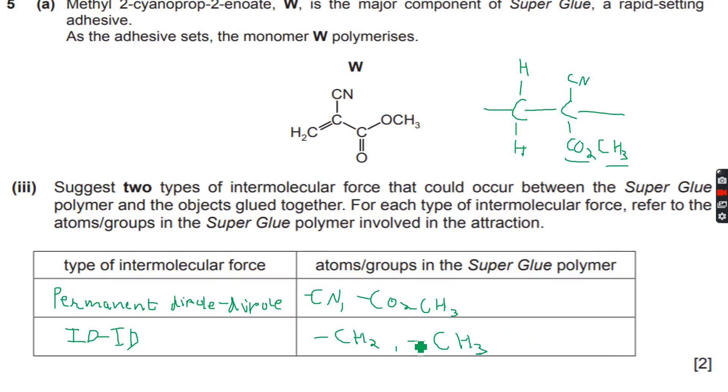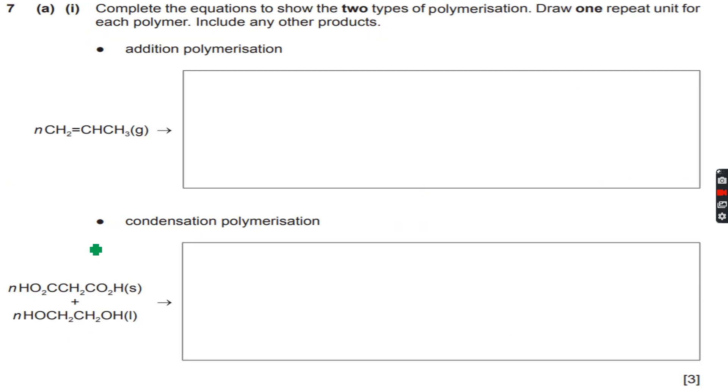We can also say CH3 over here. Now let's move to the next question. Complete the equations to show the types of polymerization. Draw one repeat unit for each polymer, including any other products. We have to draw only one repeat unit.